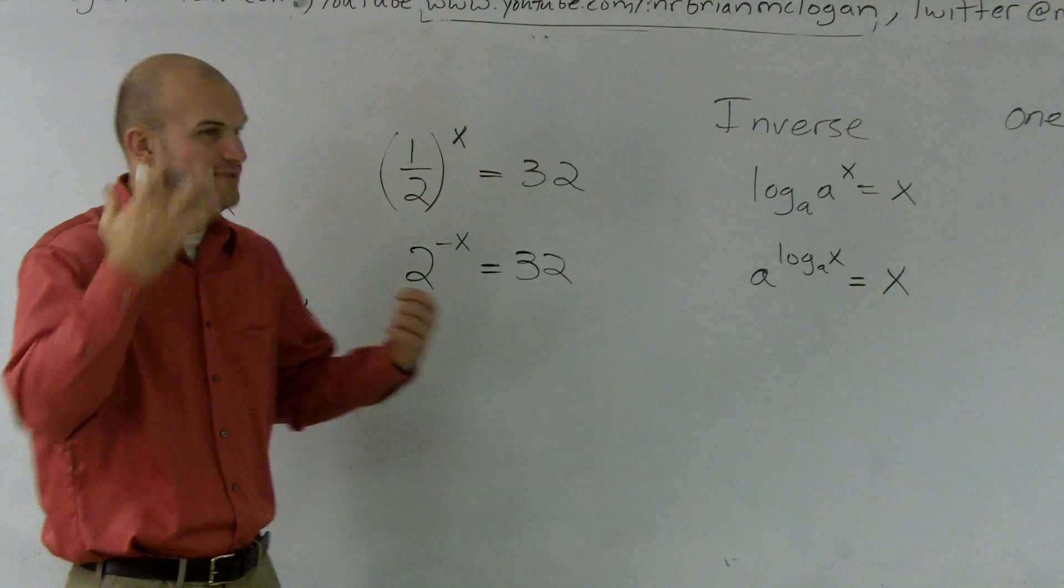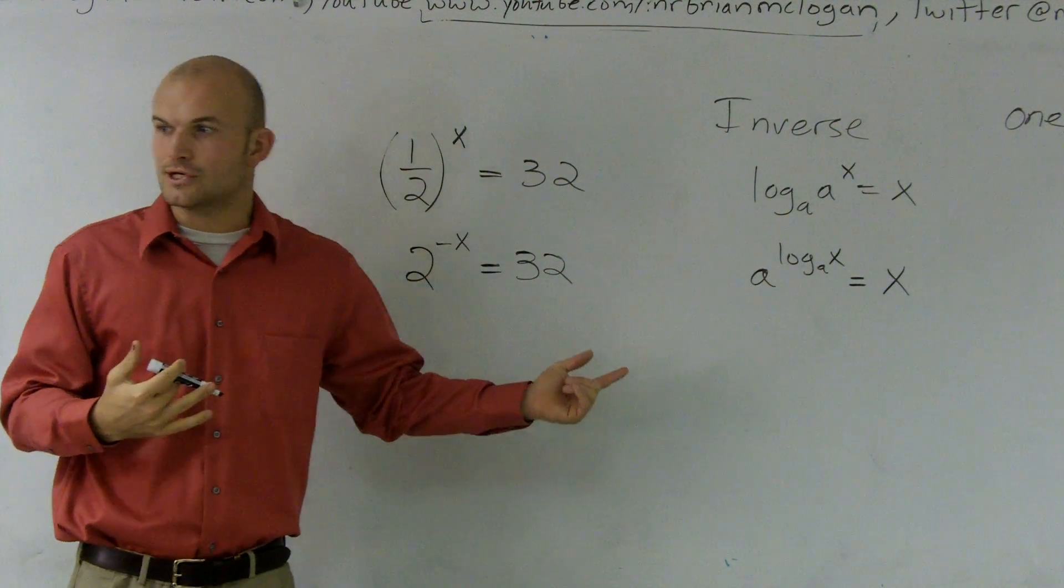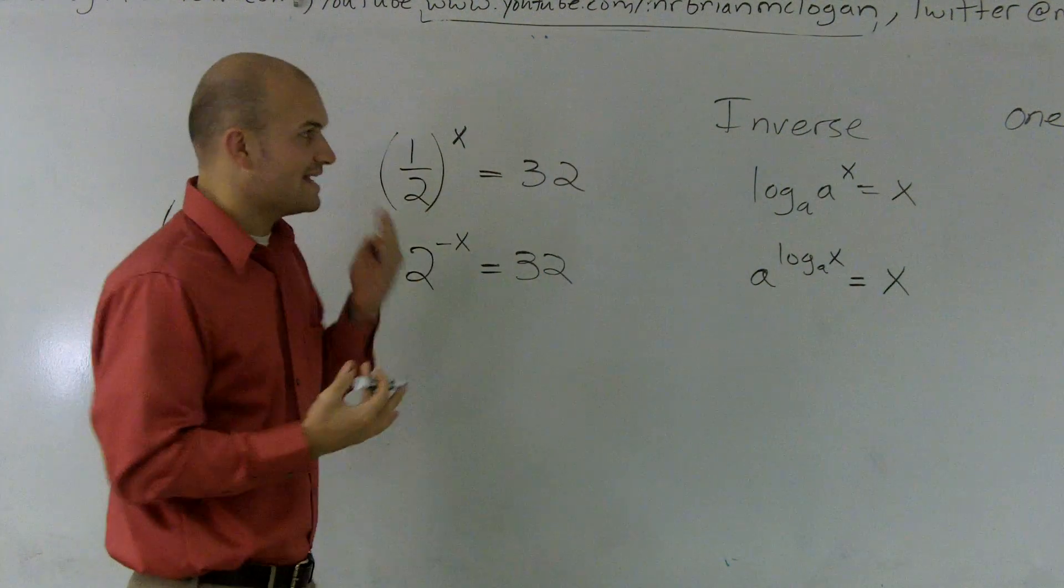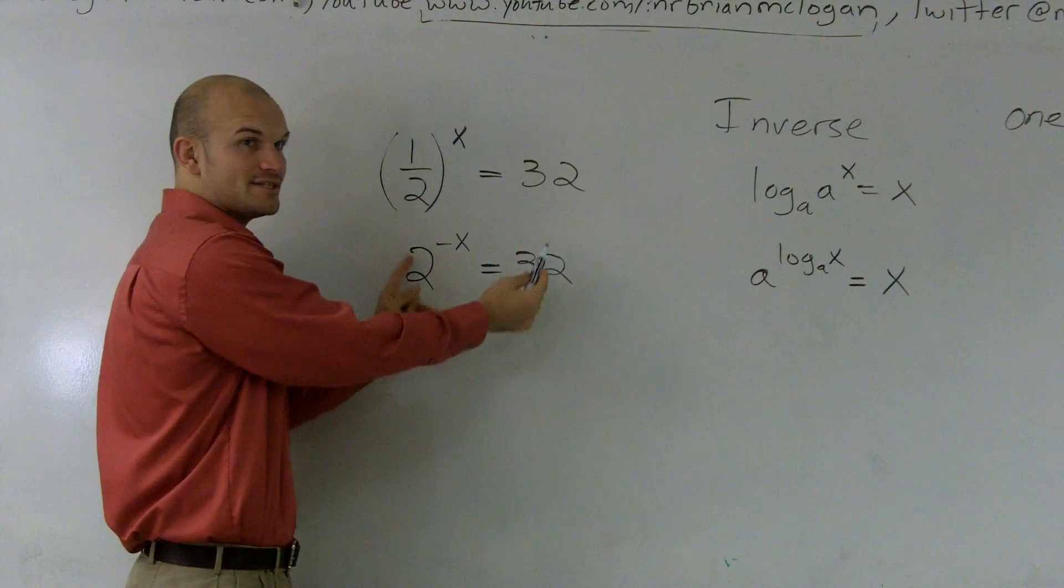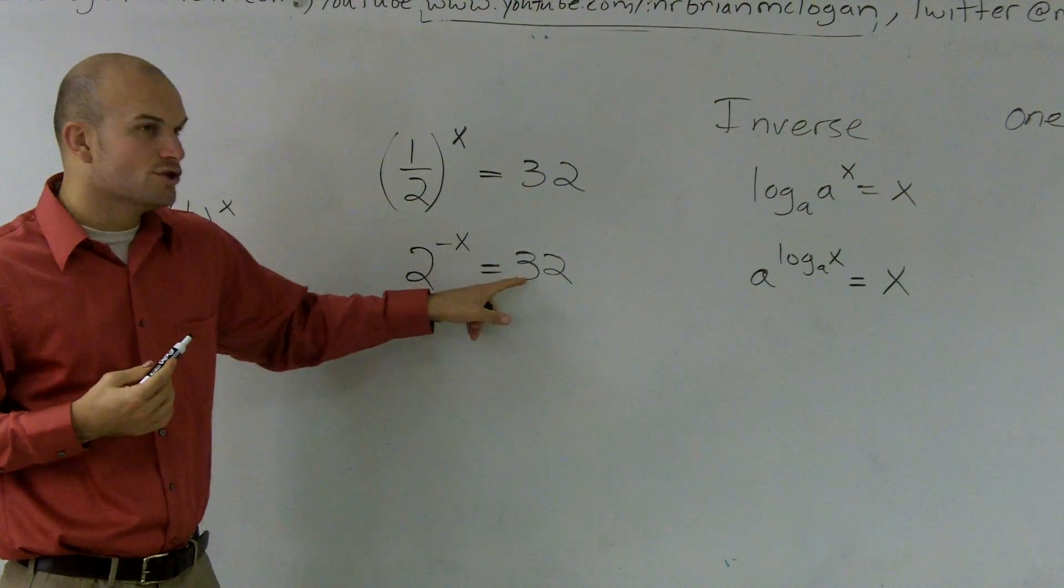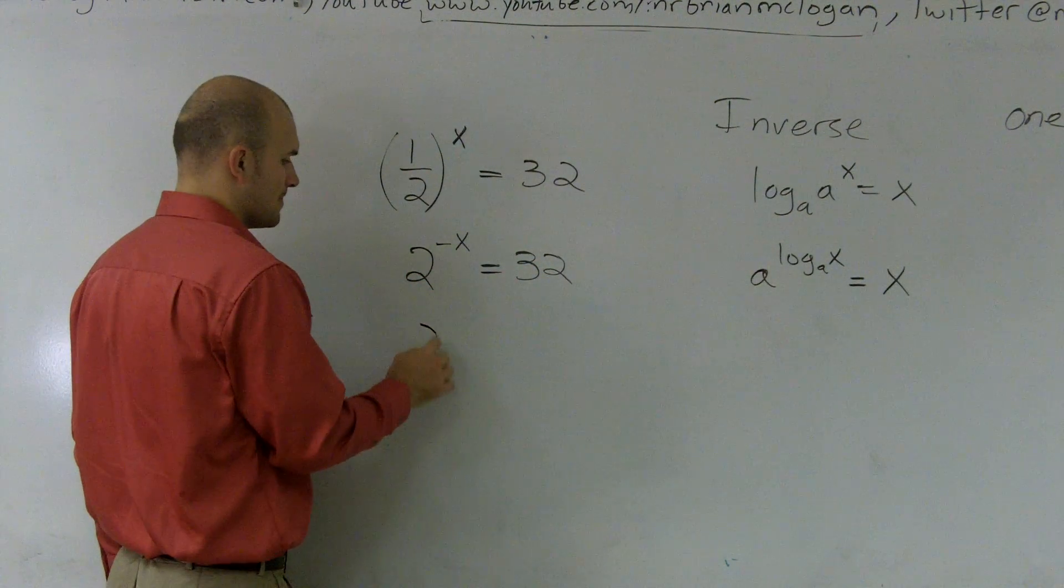Then what I can do is rather than trying to think of 2 raised to what negative number gives me 32, I'm going to use my one-to-one property, which states if I can get these to be on the same base raised to something, I can cancel them out. So if this is base 2, 2 raised to what number gives me 32? 5.